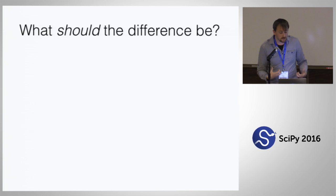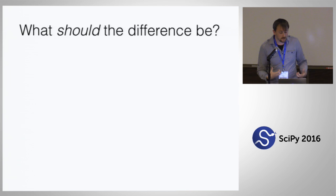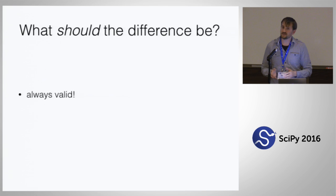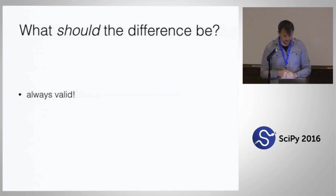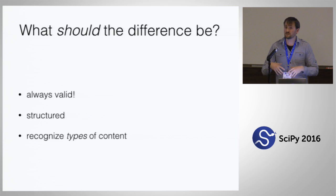From our perspective, when we started working on this project: what should the difference be when comparing notebooks? It should always be valid — step one, if you compare notebooks and merge notebooks, you should get a notebook back. You shouldn't get 'this isn't JSON anymore,' which you may have encountered after trying to merge notebooks. It should be properly structured, and it should actually take the content of the notebook into account — when you're doing the comparison, you should be thinking about what's in the notebook, what's important, how do we deal with that.